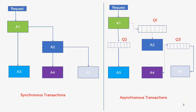Before we deep dive into the publisher subscriber model, which is also called as the pub-sub model, let us understand the difference between synchronous and asynchronous transactions. Here in this diagram, you can see there are two systems. One is having the point-to-point connections between the components or microservices on the left-hand side.